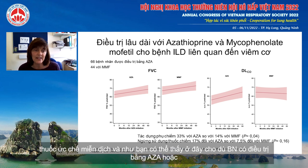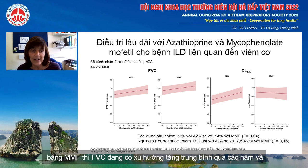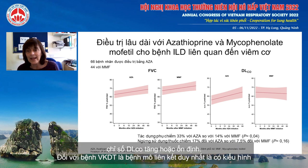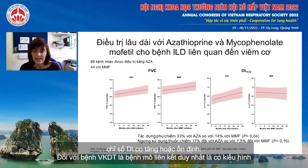Whether treated with azathioprine or mycophenolate, FVC tends to increase on average over the years, and DLCO increases or stabilizes.